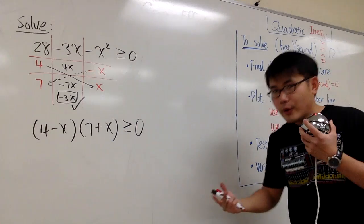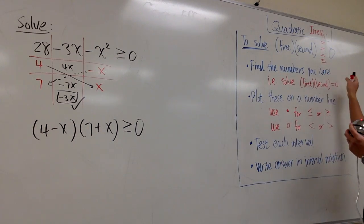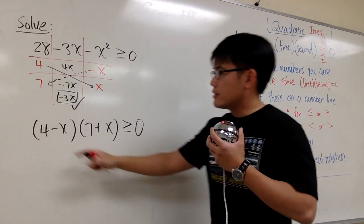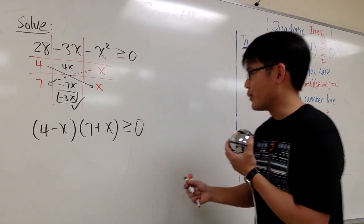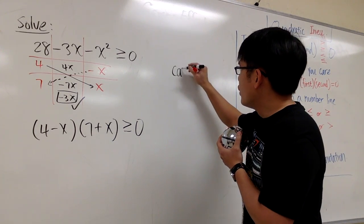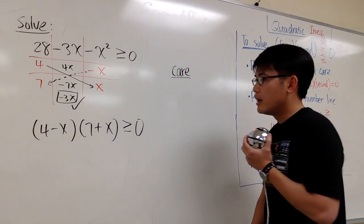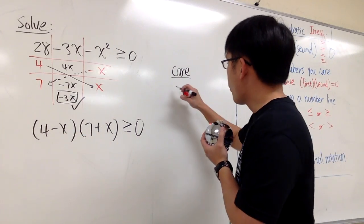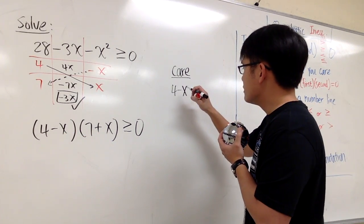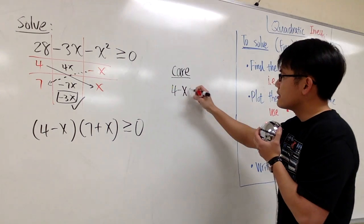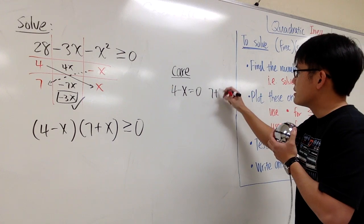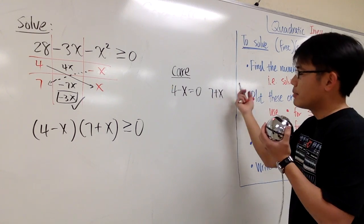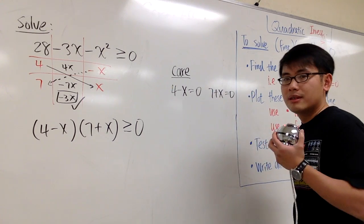First thing, we would like to find the numbers that we care. Namely, we'll just solve the regular equation. Right here, the two numbers that we care in this case is that I want to see 4 minus x equal to 0. When will that happen? And secondly, I want to see 7 plus x, when will that be 0?